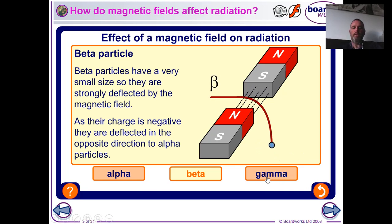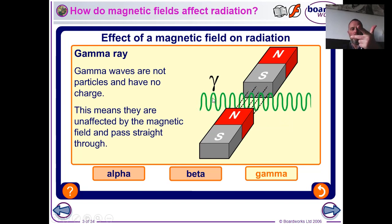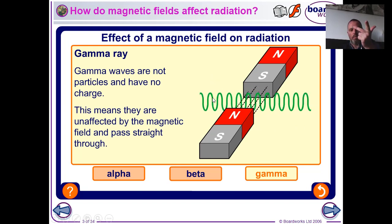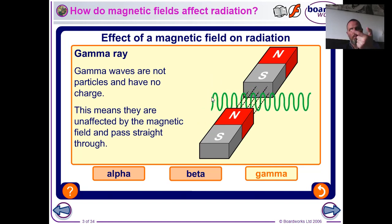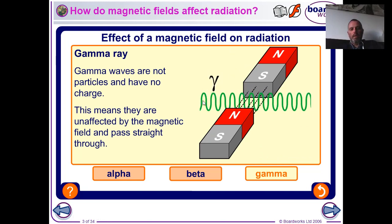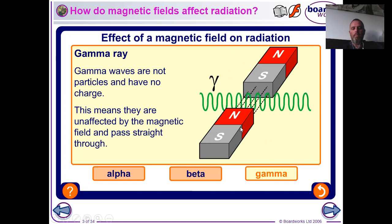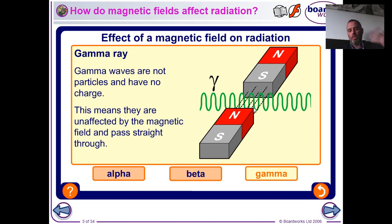Gamma particles have no charge whatsoever. Applying Fleming's Left Hand Rule requires a current, but there is no charge moving, so there is no force. Gamma ray photons carry straight on and are not deflected by the magnetic field at all, which confirms that gamma radiation carries no charge.